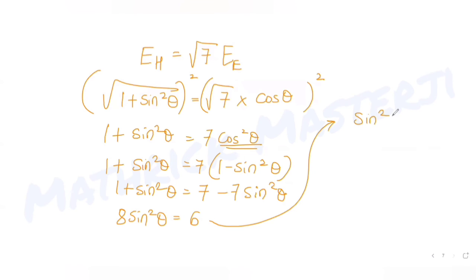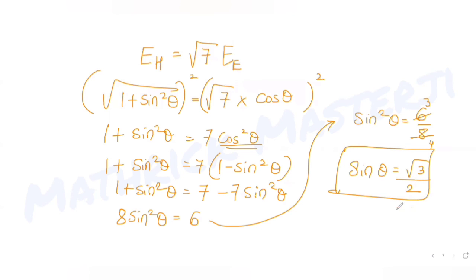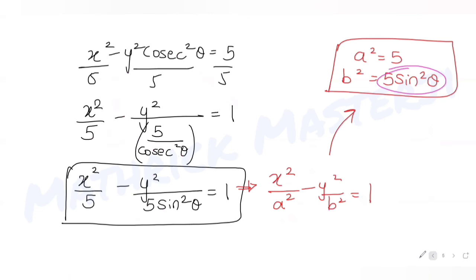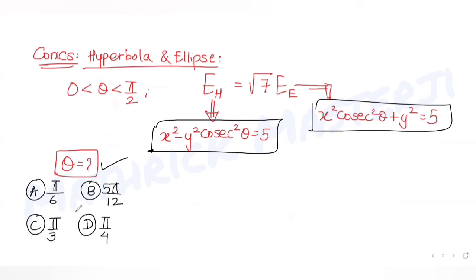Rearranging: 1 + sin²θ + 7sin²θ = 7, so 8sin²θ = 6, giving sin²θ = 6/8 = 3/4. Therefore sin θ = √3/2, which means θ = sin⁻¹(√3/2) = 60° = π/3. This matches option C, so π/3 is the correct answer.